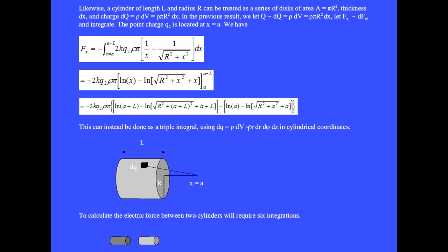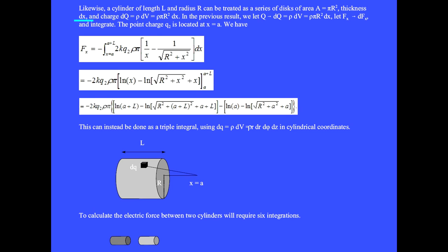A cylinder of length L and radius big R can be treated as a series of disks of area pi R squared, thickness dx, and charge dQ equals rho dV equals rho pi R squared dx, where rho is the volume charge density in coulombs per cubic meter. Letting Q go to dQ and force go to dF and integrating, the x component of the total force is found by integrating from A to A plus L: 2k Q2 rho pi times (1 over x minus 1 over the square root of R squared plus x squared) dx.